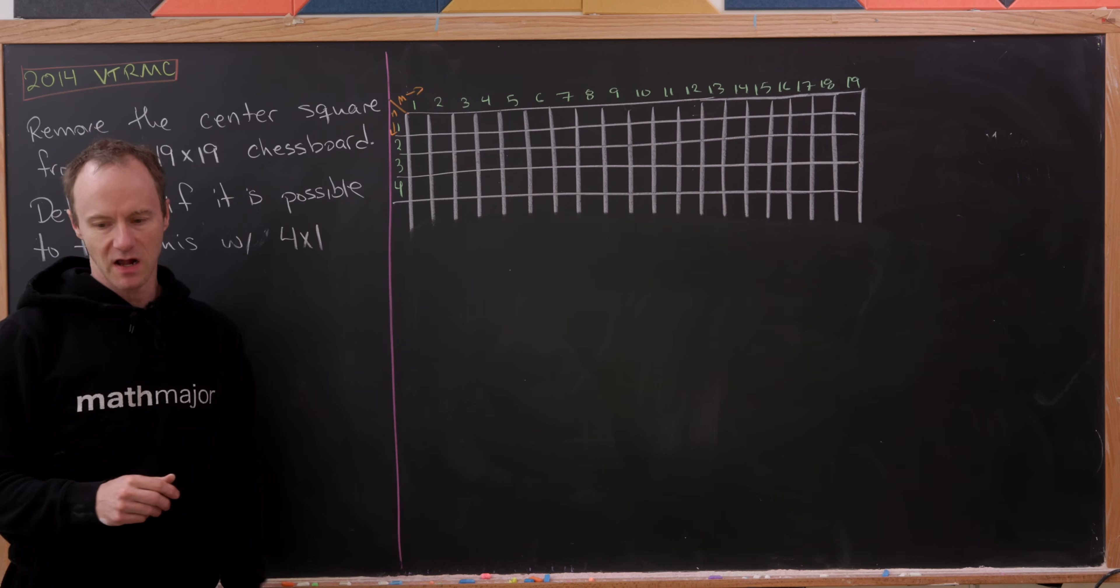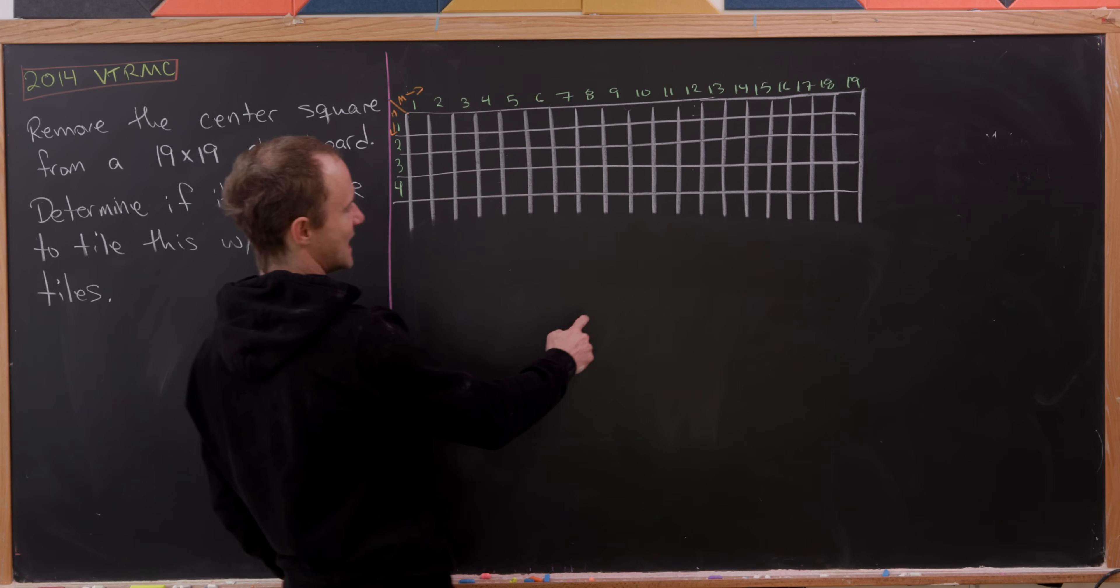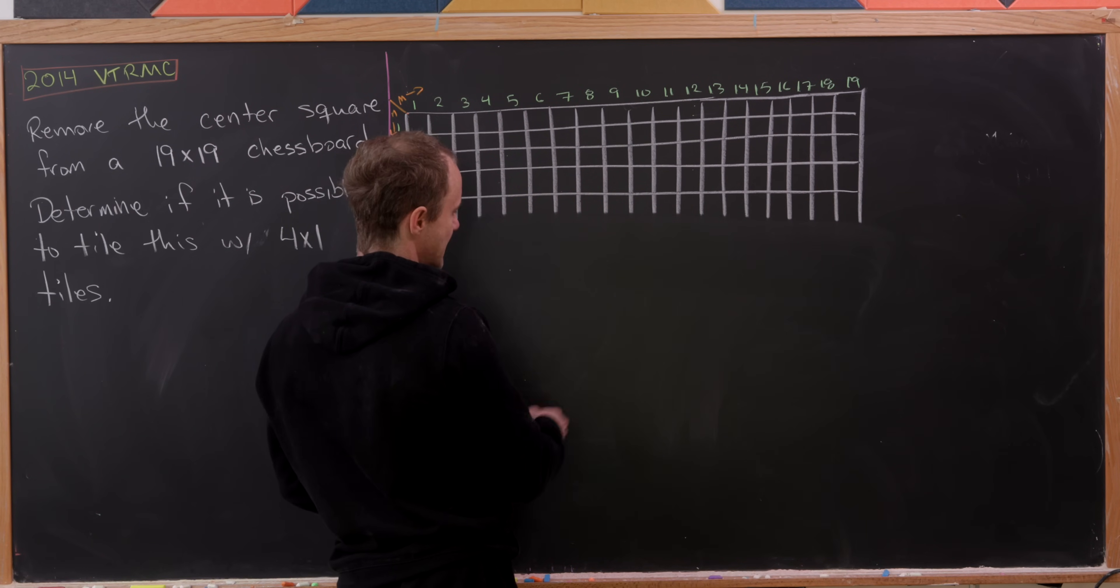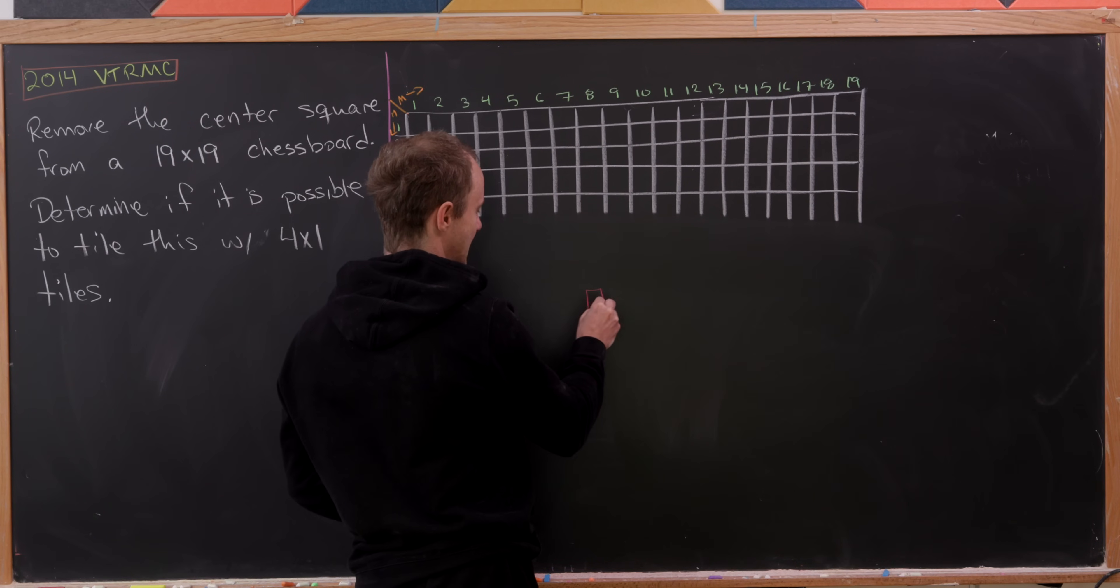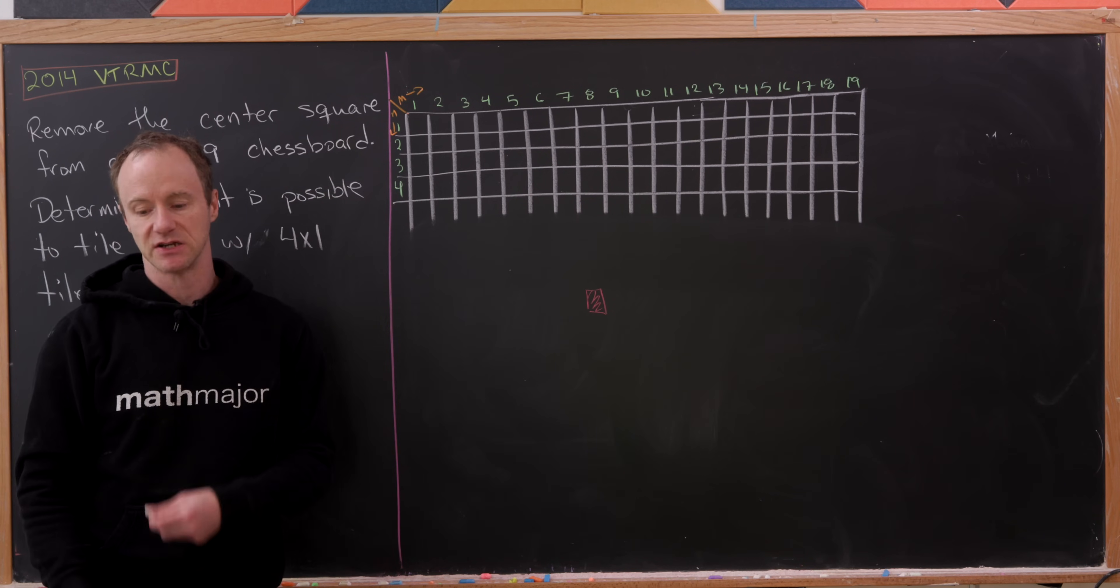Let's get a small mock-up of our 19 by 19 chessboard on the board. So I've got my mock-up of our chessboard here. And notice, by this setup, I'm removing a square which is about right here. And that square right here will be the 10-10 position. That's just what puts you in the middle of a 19 by 19 chessboard.